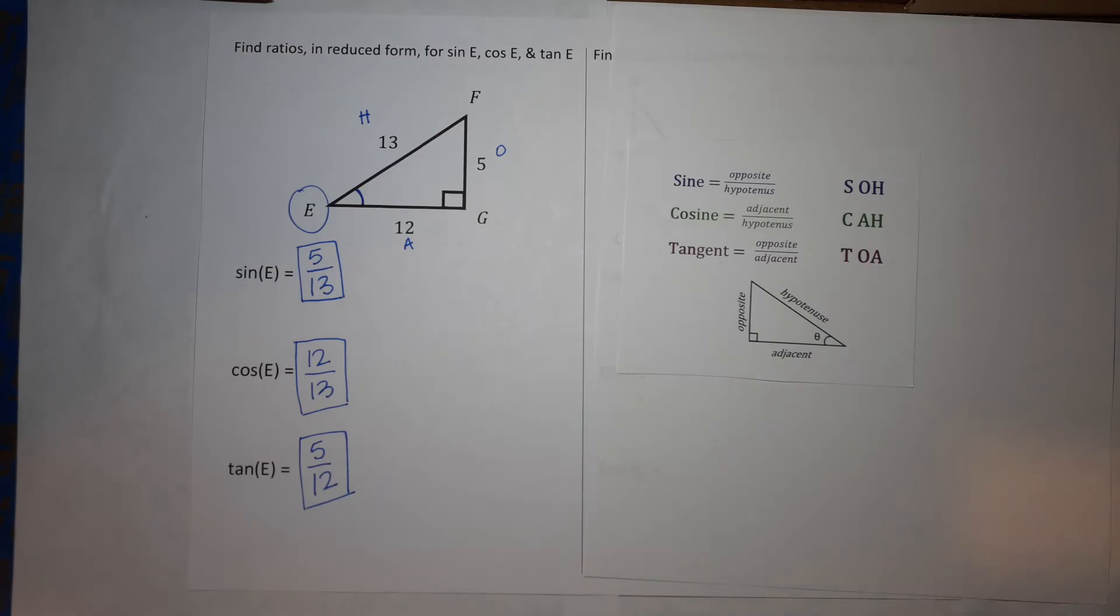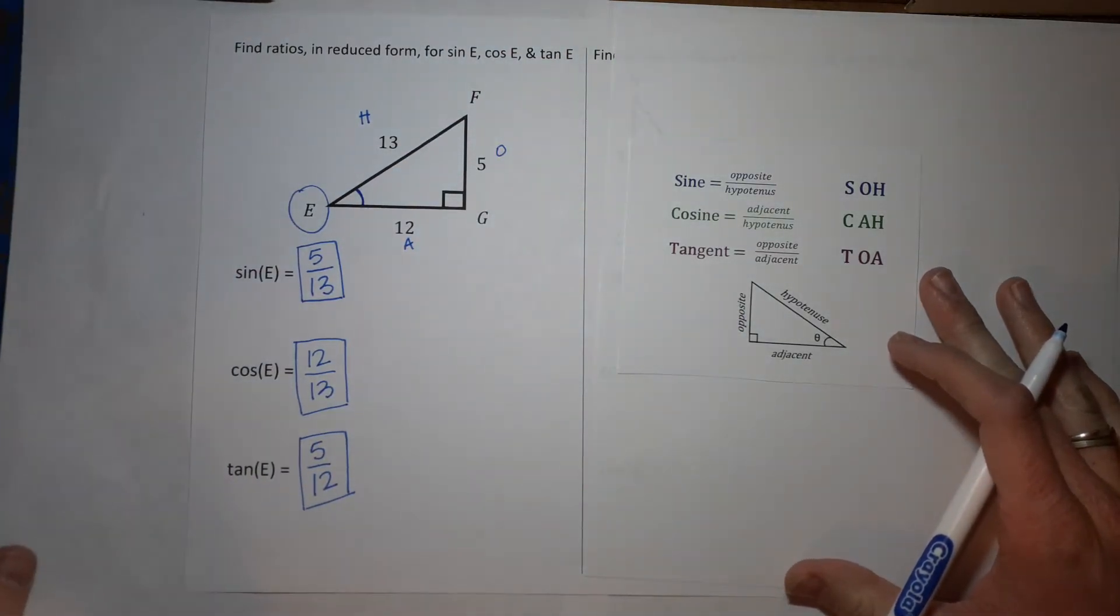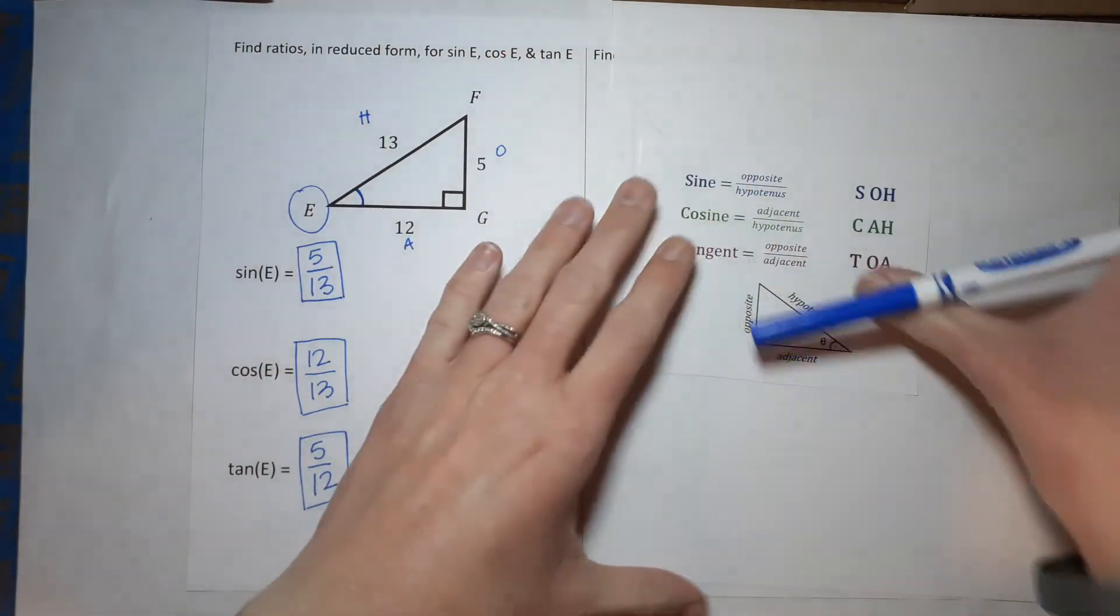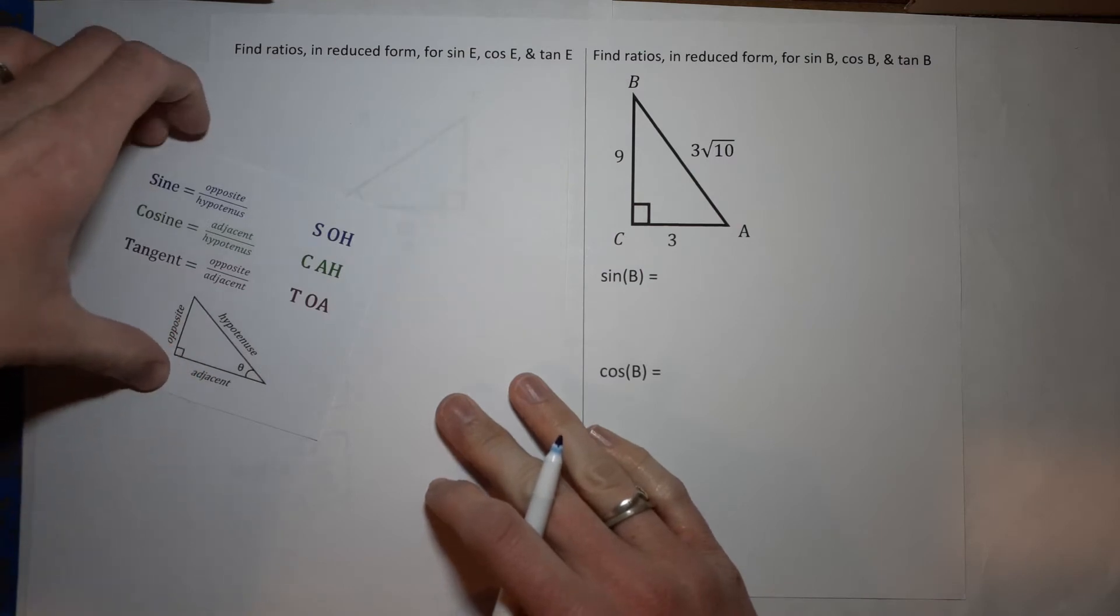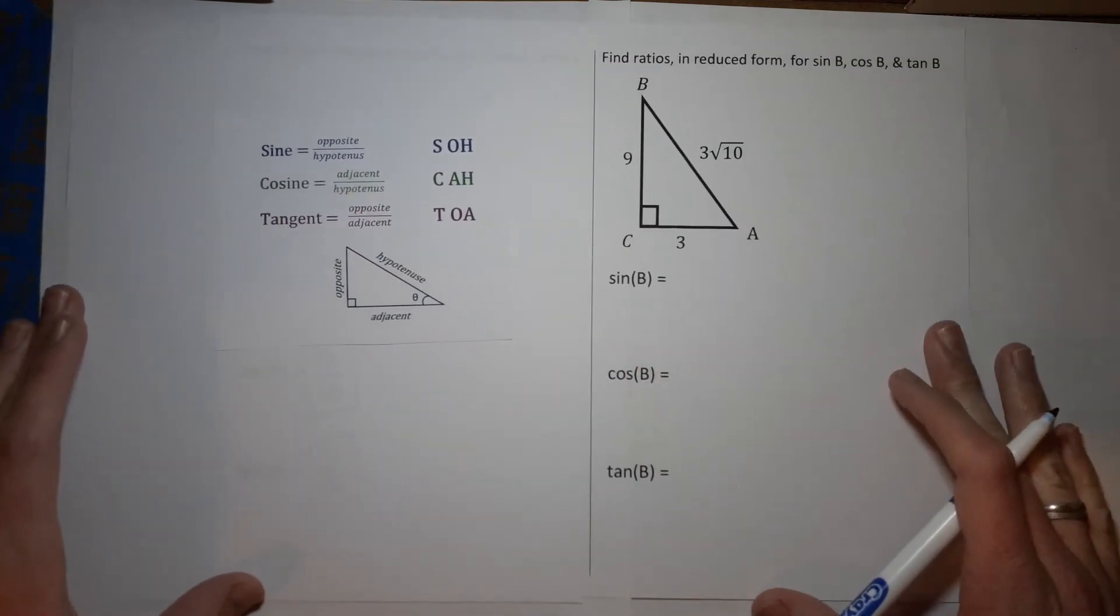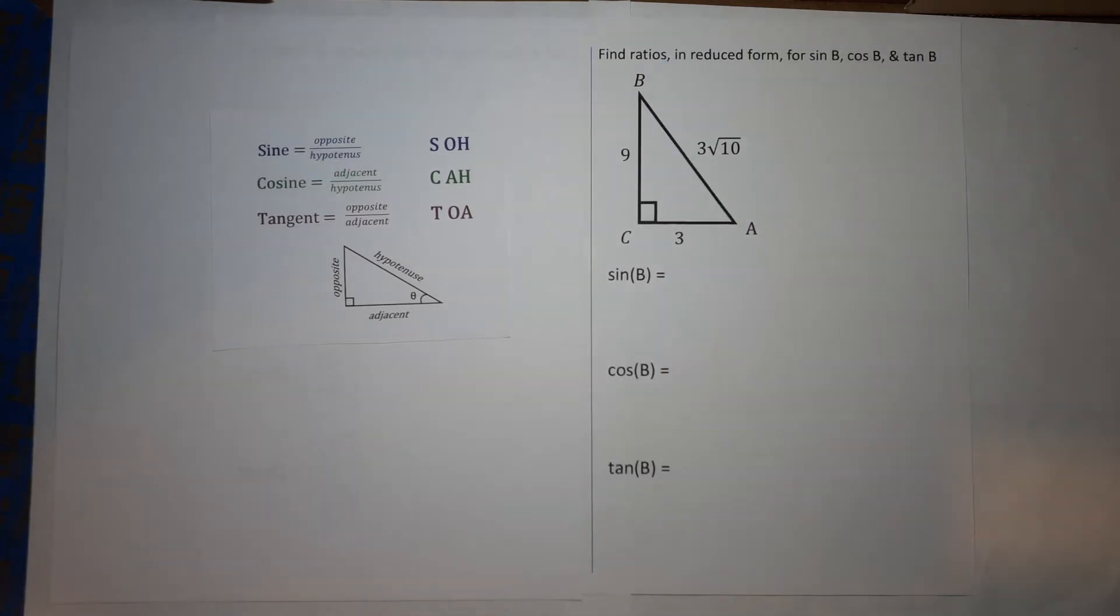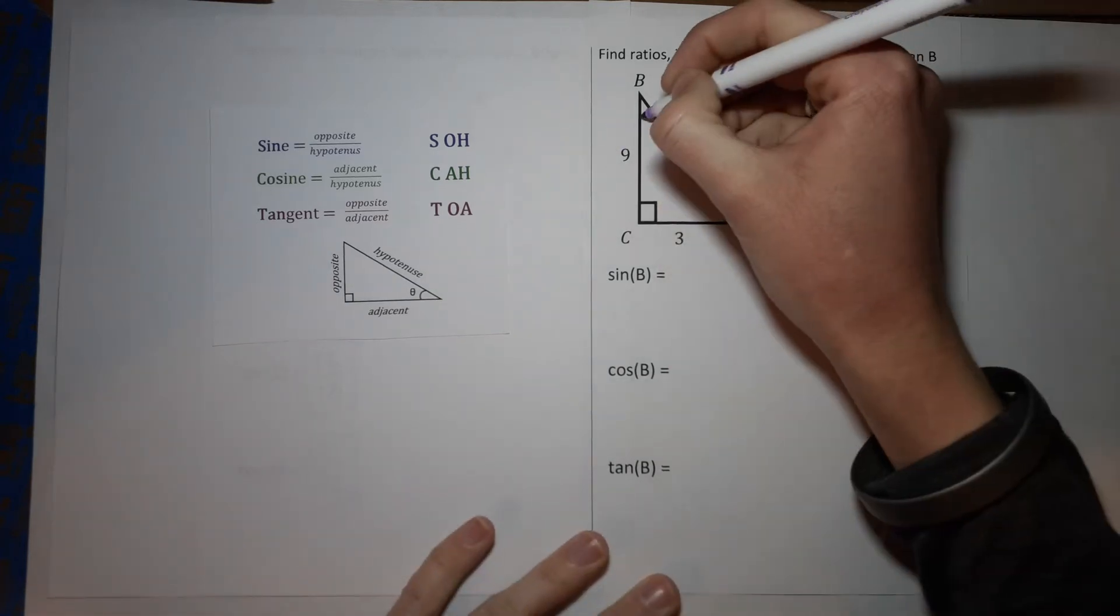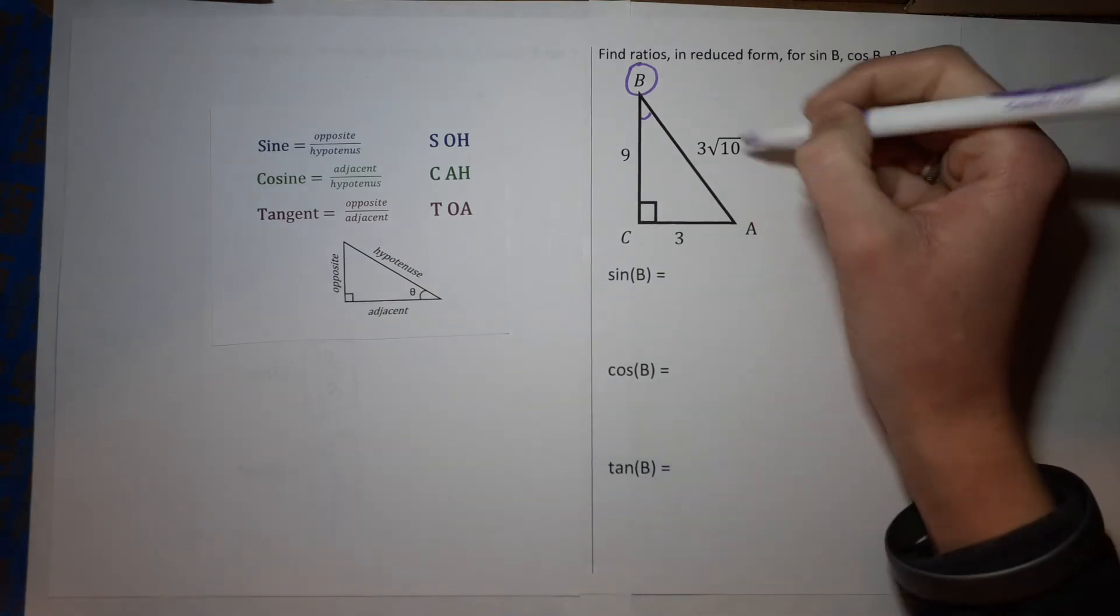Oh my gosh, alright. Over here we are going to have some that can be simplified, that need to be simplified, so stick around. Now we are looking for find ratios in reduced form for sine of B, cosine of B, and tangent of B. So this time we're working with angle B.